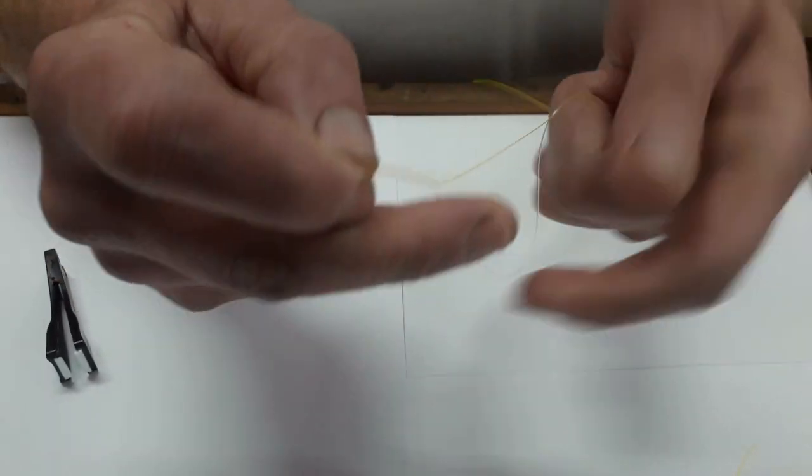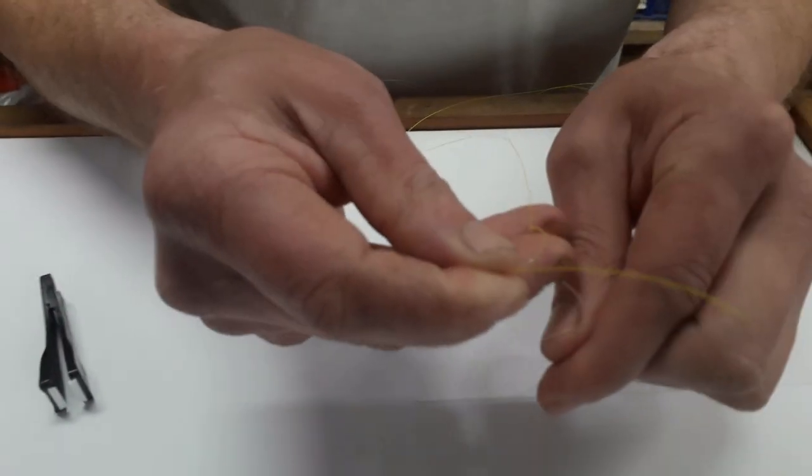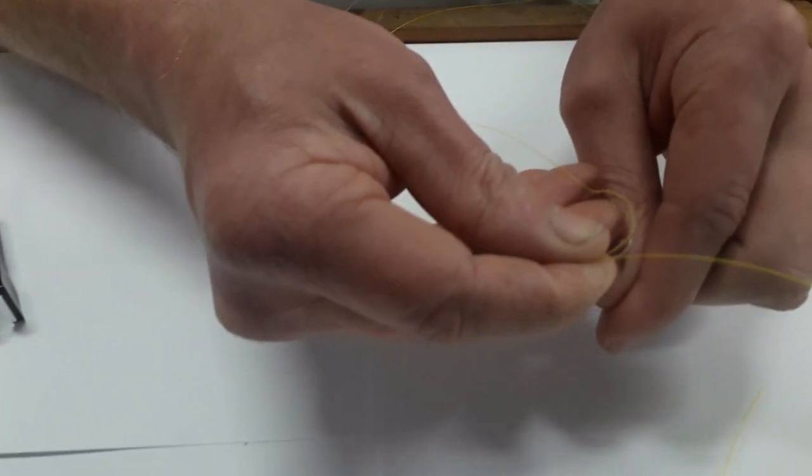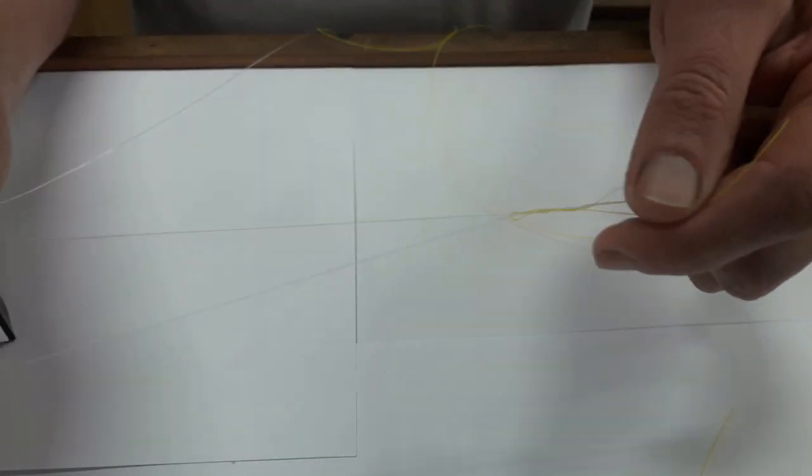One, two, three, four times around there. Bring the end back up through this loop. Pull that through.